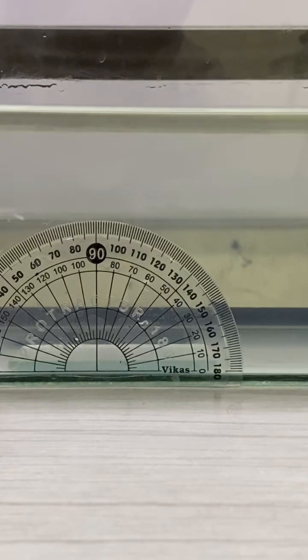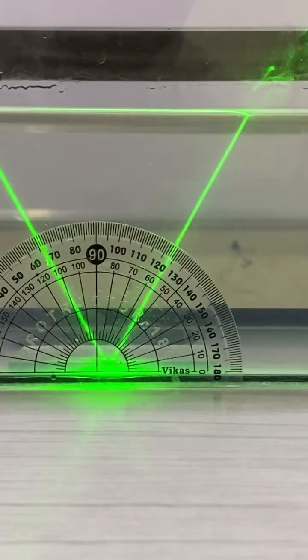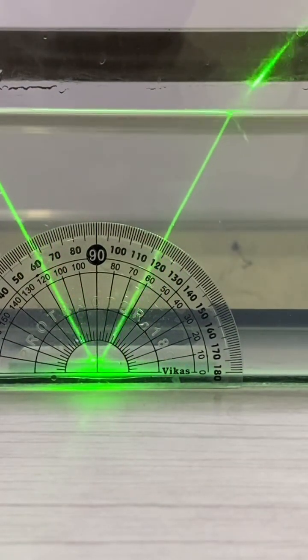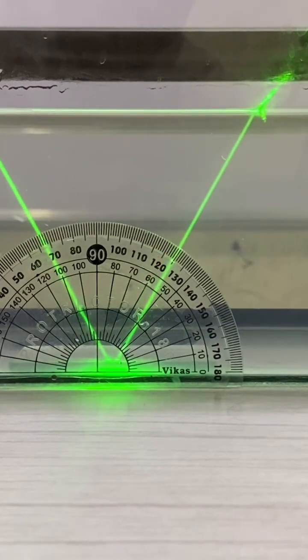Just observe here I am focusing the light on the mirror at some angle, for example 60 degrees. You can see that the reflected light ray is also at 60 degrees.